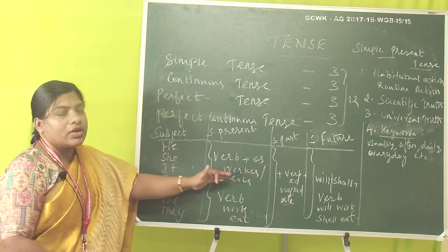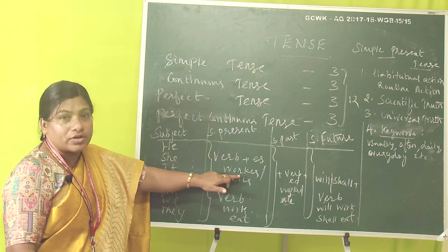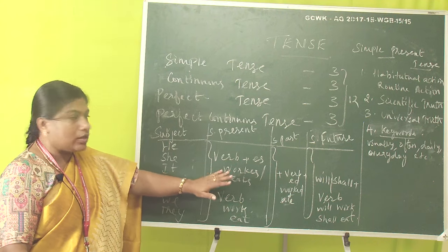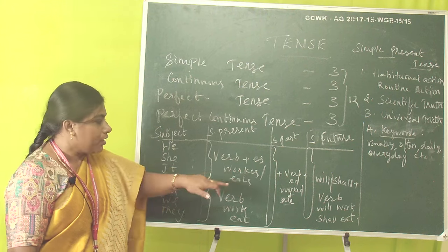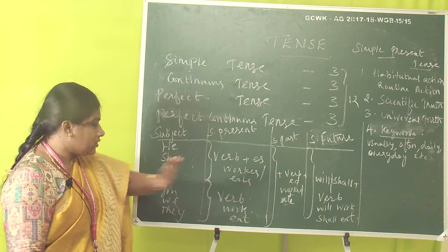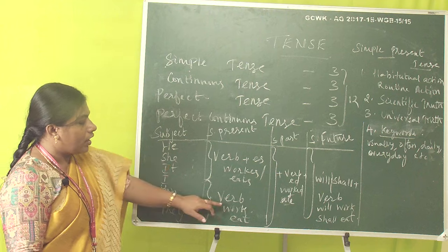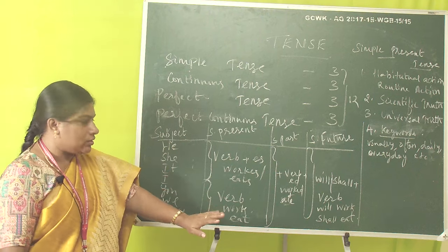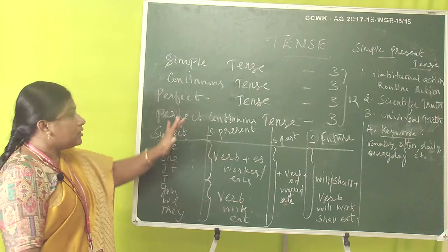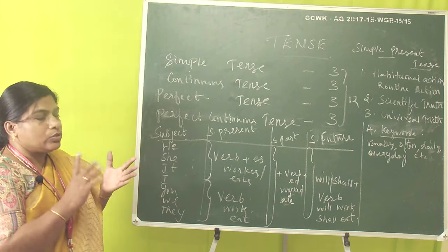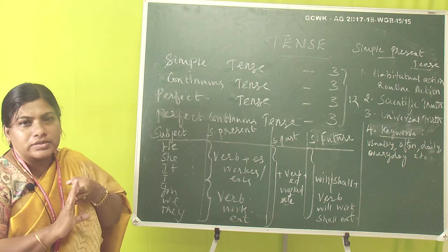Not all verbs take 'es' — I have given the differentiation. For example, 'work' becomes 'works' and 'eat' becomes 'eats' for he/she/it. For I, you, we, they — we use just the base verb, as it is: 'work' or 'eat'. In simple present tense, we have three basic rules to follow.